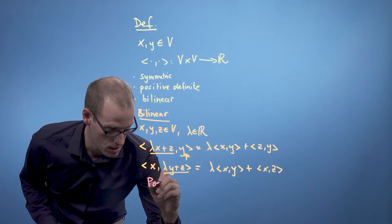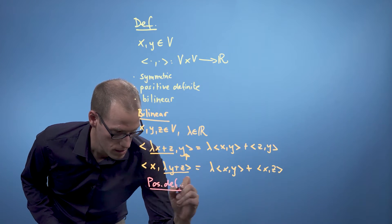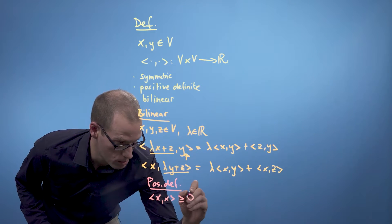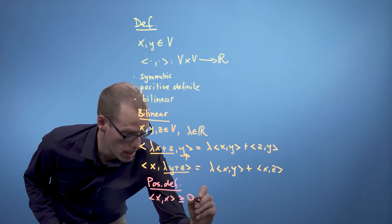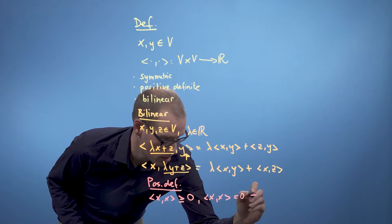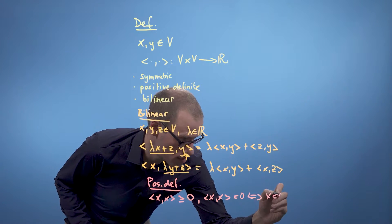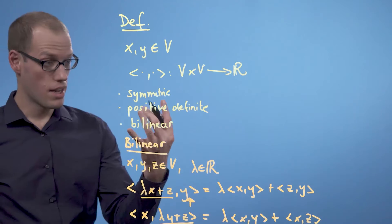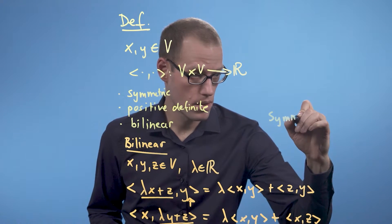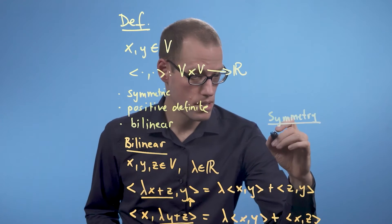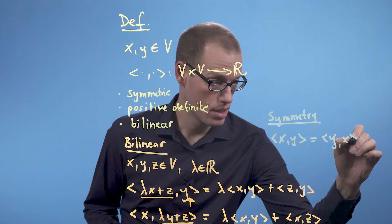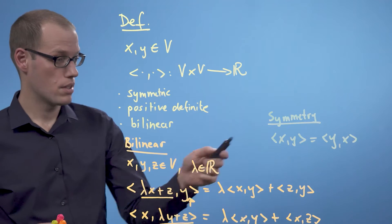Positive definite means that the inner product of x with itself is greater than or equal to 0, and equality holds if and only if x is the zero vector. Symmetric means that the inner product of x and y is the same as the inner product of y and x — so the order does not matter.